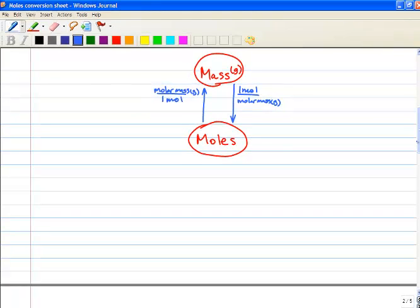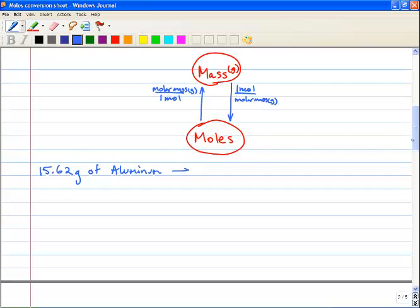To start, so if I gave you 15.62 grams of aluminum, and we wanted to get it into moles...